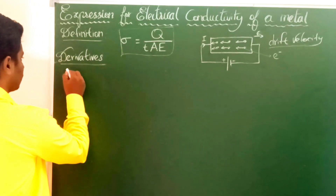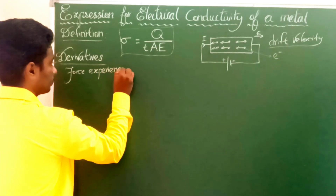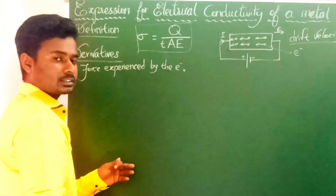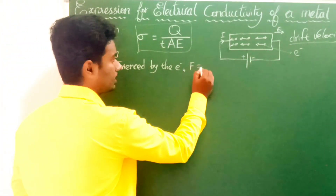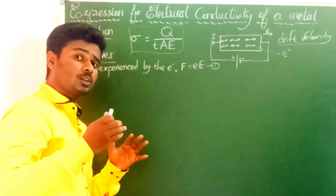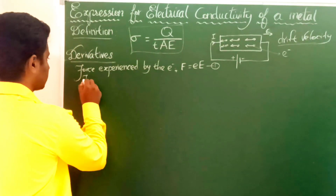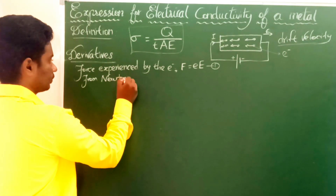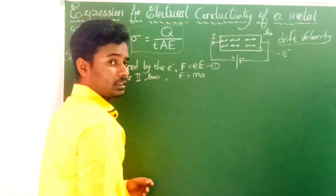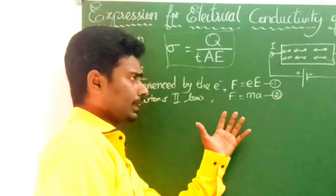First equation: the force experienced by the electron. F is equal to eE. This is equation number 1. And we know from Newton's second law of force that F is equal to mA. That is equation number 2.